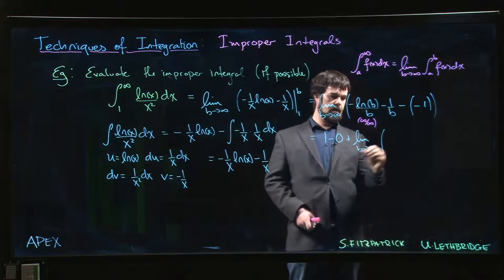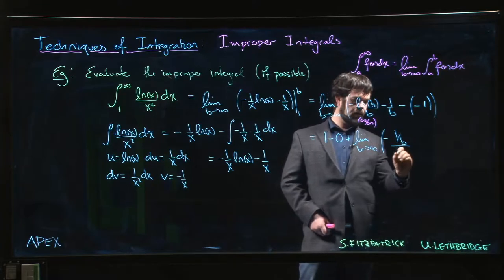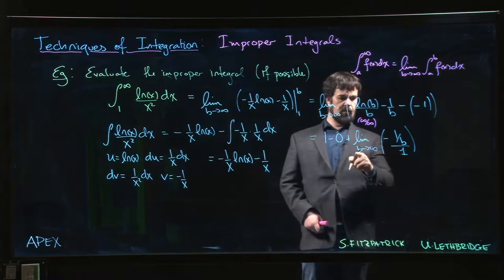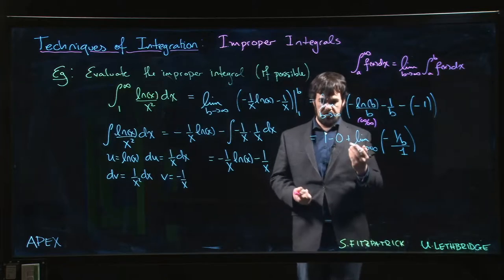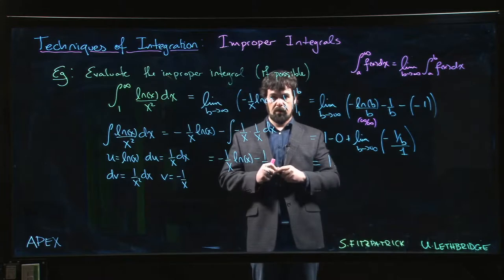So when we take the derivative of log b, we get 1 over b. The derivative of b is just 1. And of course, as b goes to infinity, that goes to 0. So we get an overall value of 1.